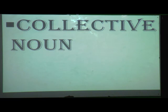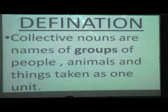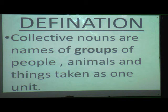Till here we have finished common nouns and proper nouns. The third type of noun is collective noun. Collective nouns are names of groups of people, animals, and things taken as one unit. The definition is on page number 21. The key word here is 'groups' - a group of people, a group of animals, or a group of things which are taken as one unit is called a collective noun.